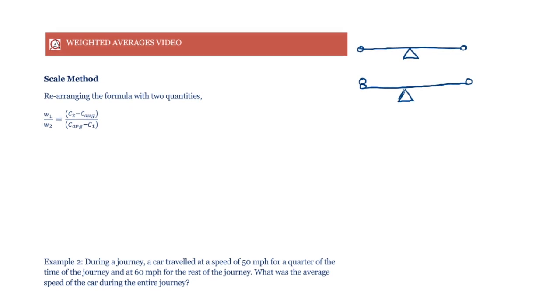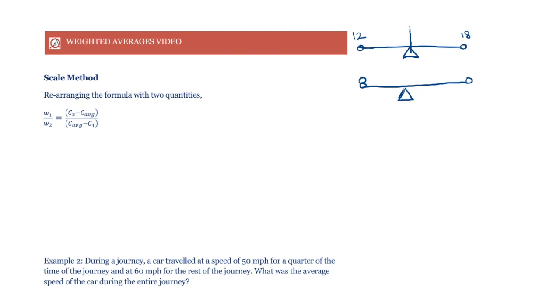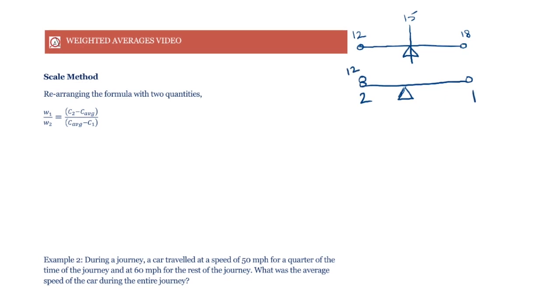The same principle is used for weighted averages. When we had one boy and one girl with ages of 12 and 18, their average comes out to be right in the middle, which is 15. But when we have two boys and one girl, the average goes closer to the age of the boys, giving us 14.